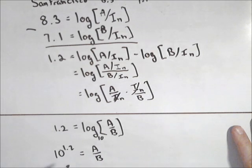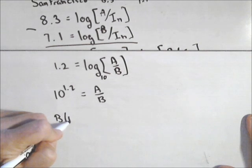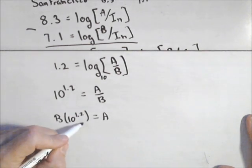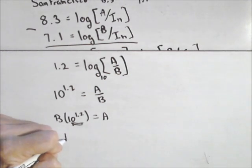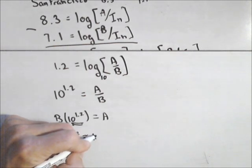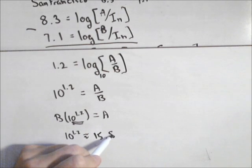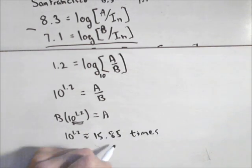So what this is saying is B times 10 to the 1.2 would give us A. So this is giving us how many times more intense. So if we calculate that, this 10 to the 1.2 is about 15.85 times more intense.